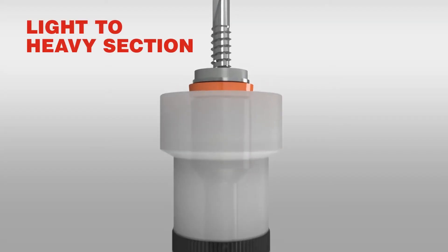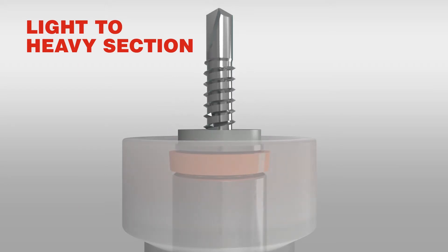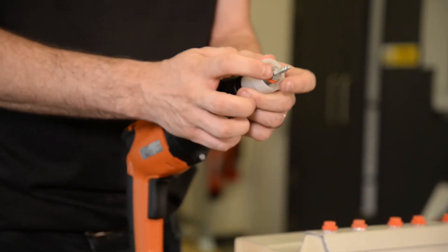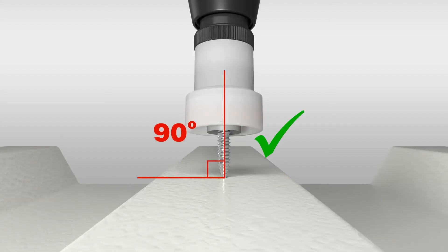When we're fastening thicker materials, typically light to heavy section metals, the setting is adjusted to account for higher resistance. Happy with the setting? Next step is a test installation.